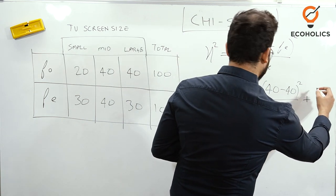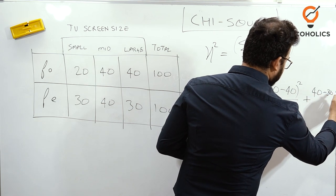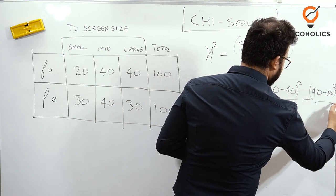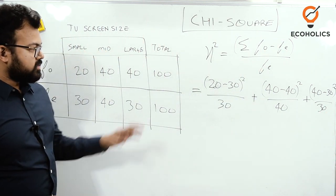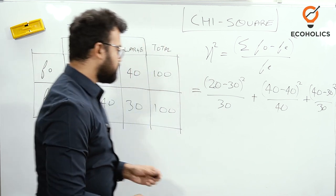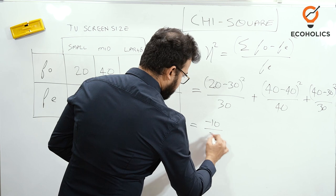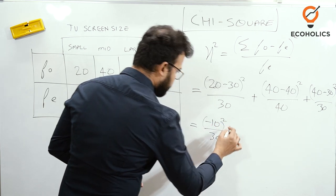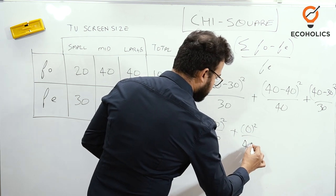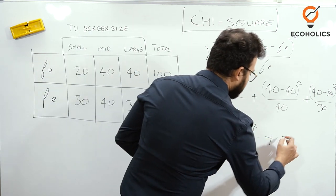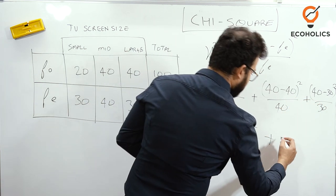It is F₀, so that is 40 minus 30. So (40 - 30)² divided by Fₑ, that is 30. This is how you will solve. Now if we proceed, 20 minus 30 is minus 10, whole square divided by 30. Plus this is 0, so we can say just for the sake of writing it, we'll write 0² divided by 40.